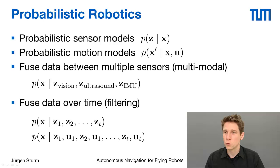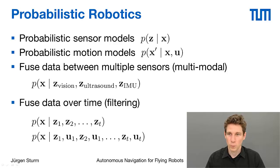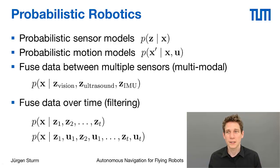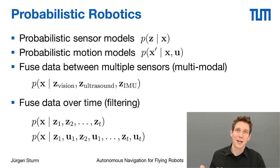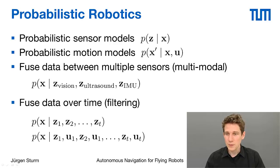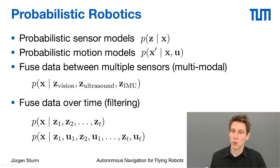We then face two inference problems. First, we want to fuse data from multiple sensor sources — for example, combining readings from a camera, an ultrasound sensor, and an IMU into a single estimate of the world state. Second, since we receive sensor readings continuously over time, we want to fuse data over time as well — this is called filtering. The Kalman filter, which we will look at next week, is a very efficient variant of a filter for this purpose. Ideally, we fuse both sensor observations Z1 to Zt and the motion commands U1 to UT.